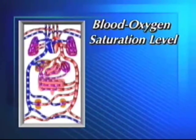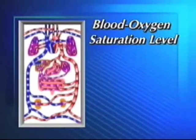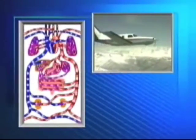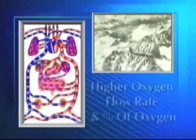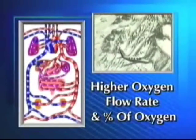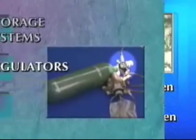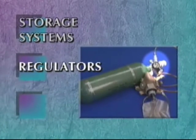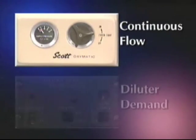The body's blood oxygen saturation level — the capacity of the blood to transport oxygen — is normally between 96 and 98 percent. To maintain this level as you ascend to altitude, your body must receive a correspondingly higher oxygen flow rate and percentage of oxygen. Regulators help in determining the proper oxygen flow, and most types fall into one of two categories: continuous flow or diluter demand.